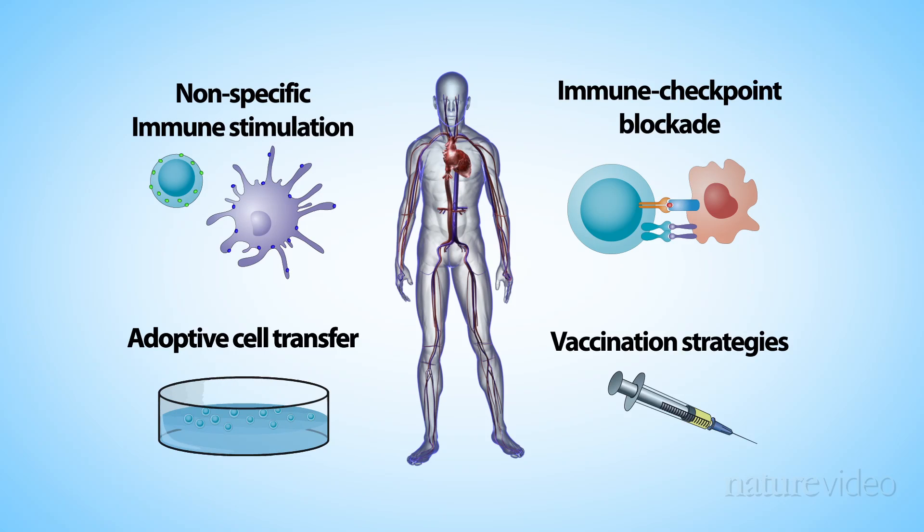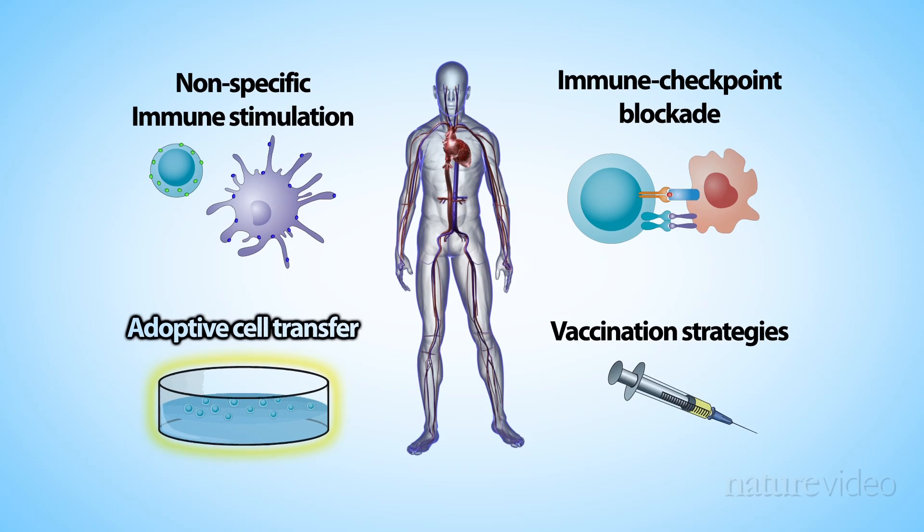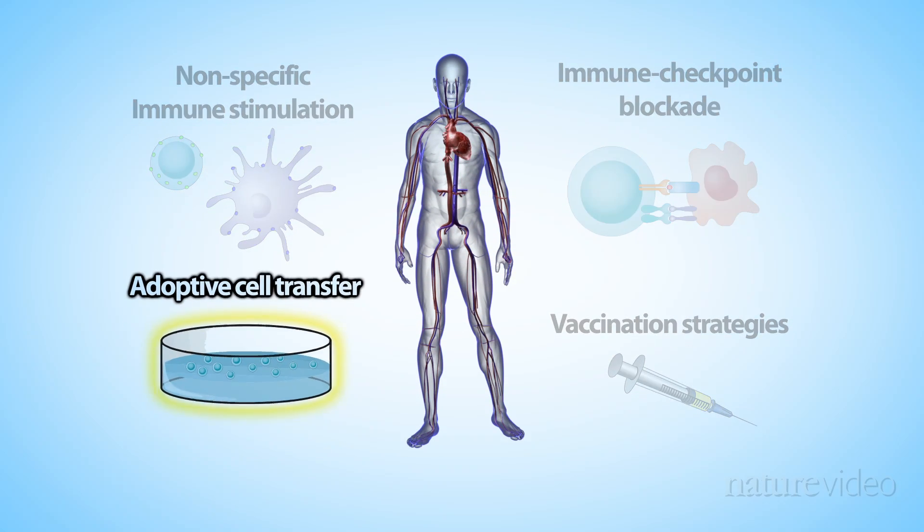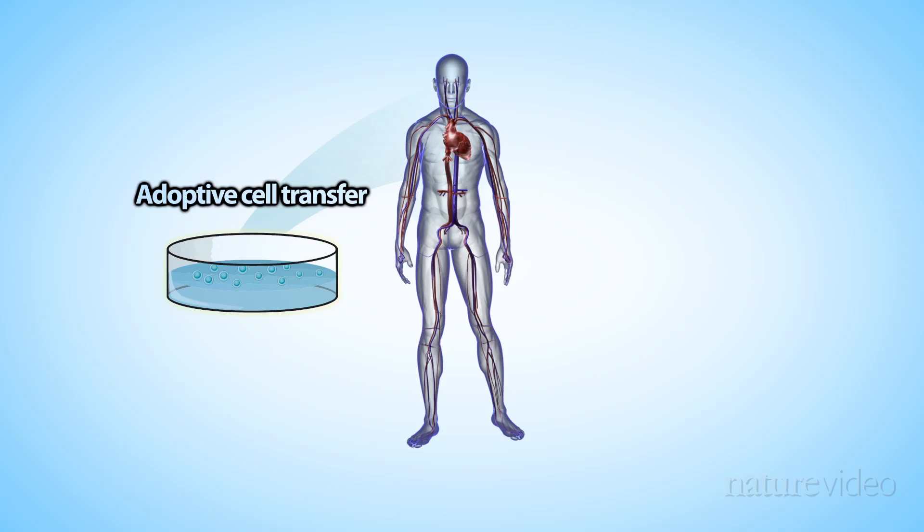Activating immune cells inside the body can be difficult, but the next strategy, adoptive cell transfer, combats this by extracting the immune cells from the patient and activating them outside the body. It enables researchers to specifically target the cancer tissue.